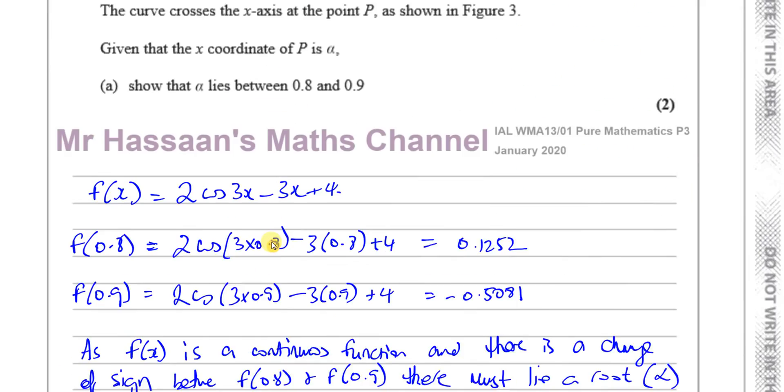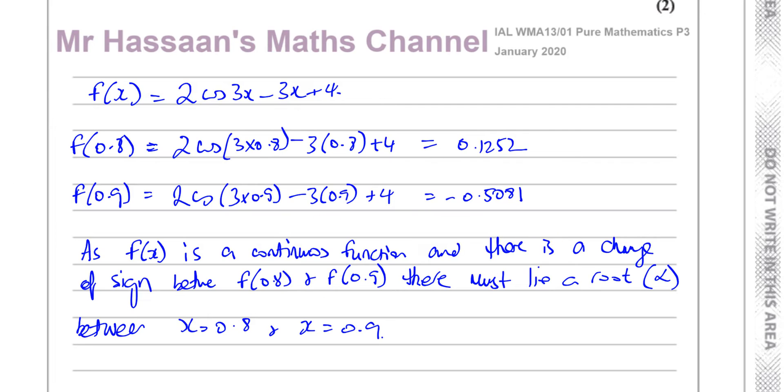So you don't just say there's a change in sign. You show there's a change in sign. So you give the calculation that shows the change in sign, and you don't just leave it like that. You also write in words that as there's a change in sign between those two values, when those two values put into the function,